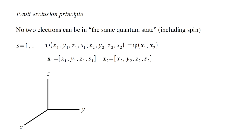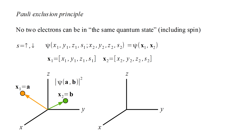Consider the configuration where electron one (colored orange) has coordinates a, and electron two (colored green) has coordinates b. The probability of this configuration is specified by the magnitude squared of psi(a, b). If instead electron one had coordinates b and electron two had coordinates a, then the probability factor would be the magnitude squared of psi(b, a). Mathematically, these could be different states of the system with different probabilities.